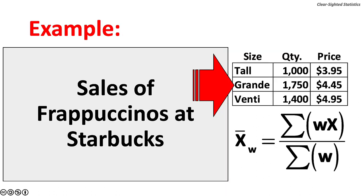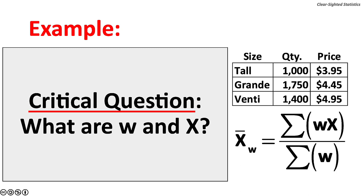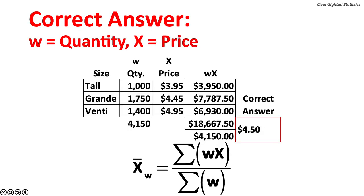Here is an example using Starbucks Frappuccinos. Here are the sales for Frappuccinos at the outlet on 1313 Main Street for last week. What is the average price per Frappuccino sold? The critical question: what are the weights w and what are the random variables x? The weighted mean cannot be less than $3.95, the price of a tall, or more than $4.95, the price of a venti. Clearly, price is the random variable x and quantity are the weights. The weighted mean — the average price per Frappuccino sold — is $4.50.